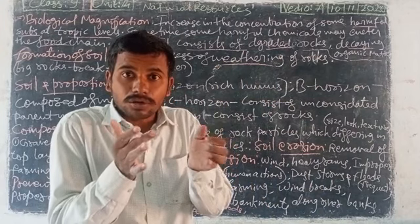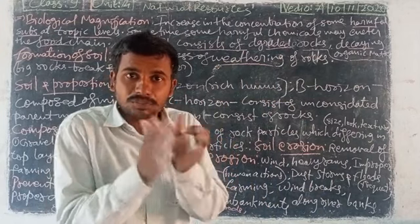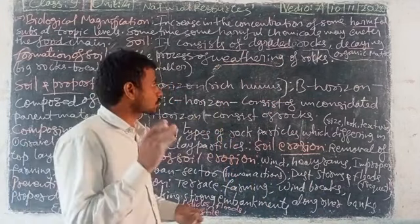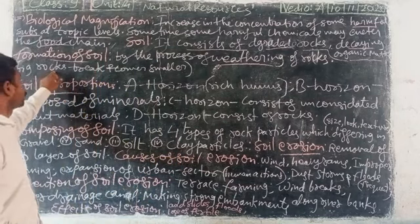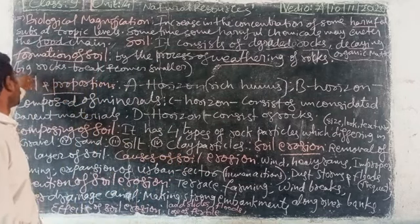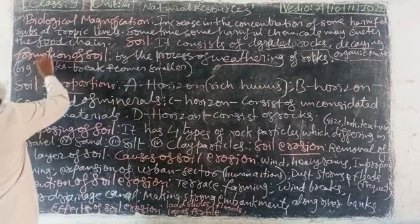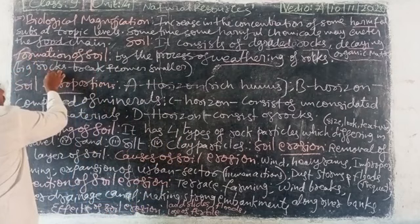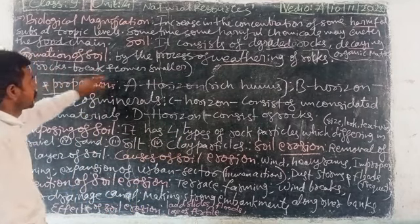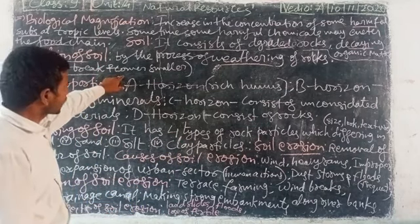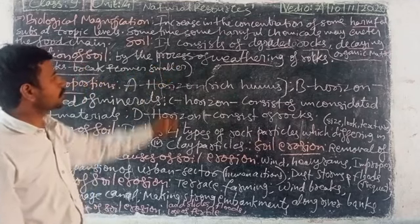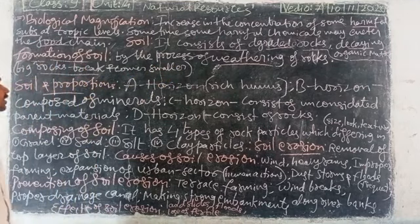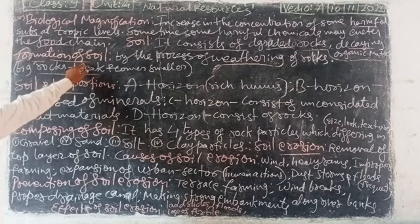Weathering means that bigger rocks break and convert into smaller and smaller pieces. Big rocks breaking and converting into smaller pieces is called weathering, which leads to the formation of soil.